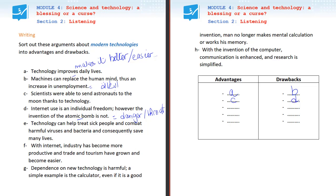Next: 'Technology can help treat sick people and combat harmful viruses and bacteria, and consequently save many lives.' So here, as we may understand, it's the use of modern technology in treating people, in saving people's lives, in medicine, in medical causes. So it's, of course, an advantage.